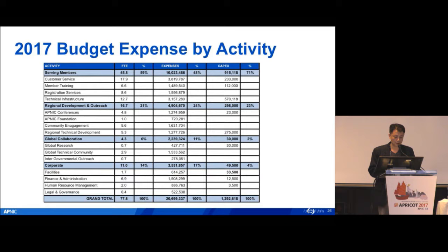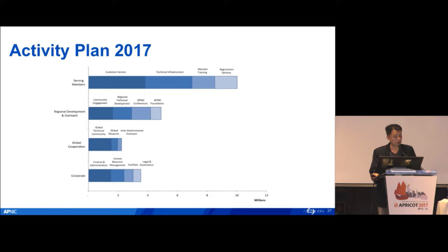The breakdown is also shown in different activity codes, with different colours based on the four activity codes: serving members, regional development, global cooperation, and corporate. That's pretty much the end of my treasury report. If you want to see the detail, go to APNIC.net/transparency for the full financial report. Any questions?